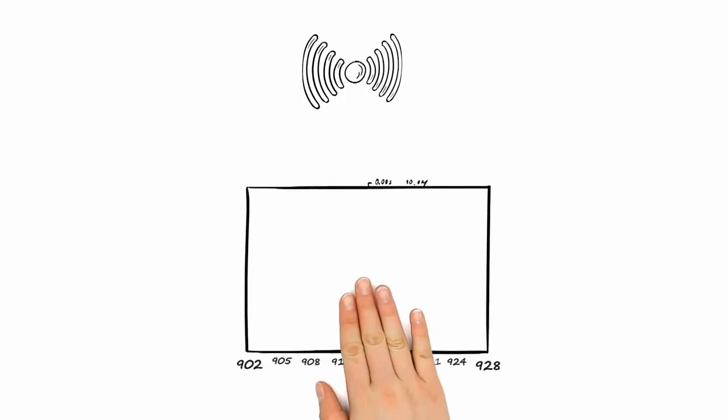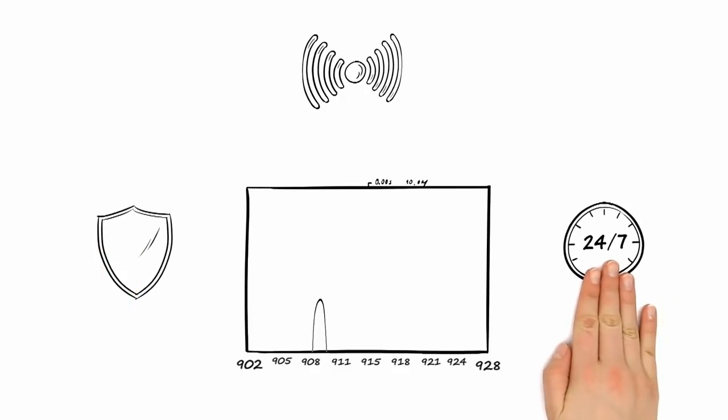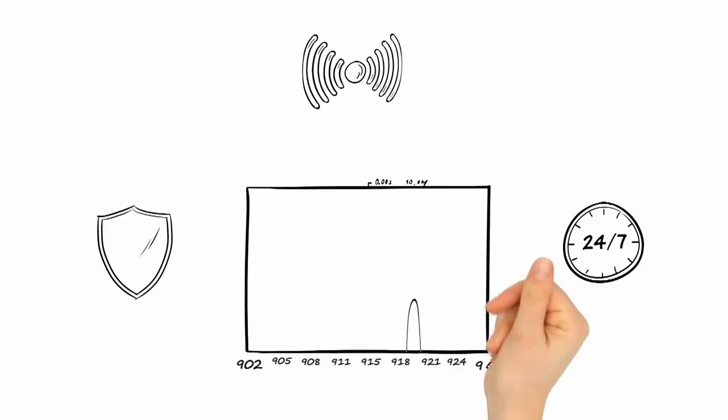In addition, trusted wireless uses frequency hopping to alternate channels according to a uniquely encrypted pattern. This creates additional security and simultaneously ensures the availability of the signal if one of the channels should become disrupted. In other words, the wireless connection heals itself.